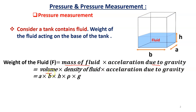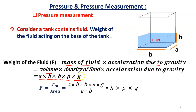Mass of the fluid equals volume multiplied by density (rho). Volume is calculated as: breadth B times width A times fluid height h, so volume = A × B × h. Therefore weight = A × B × h × rho × g. Since pressure equals force divided by area, and the base area is A × B, we substitute to get pressure equals (A × B × h × rho × g) / (A × B).